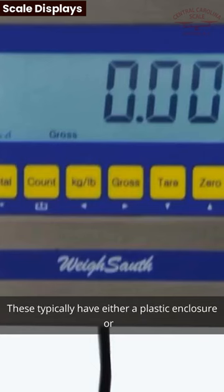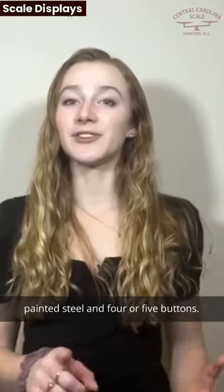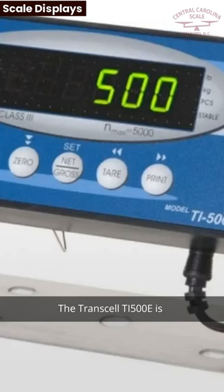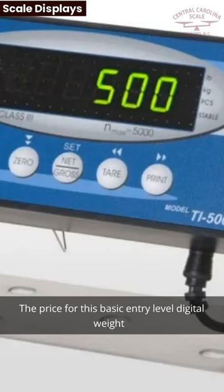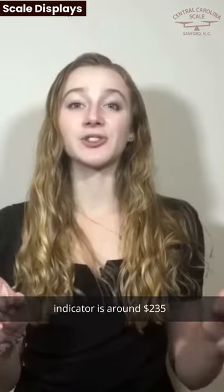These typically have either a plastic enclosure or painted steel, and four or five buttons. The Transcel TI-500E is a very popular choice for simple weighing. The price for this basic entry-level digital weight indicator is around $235.